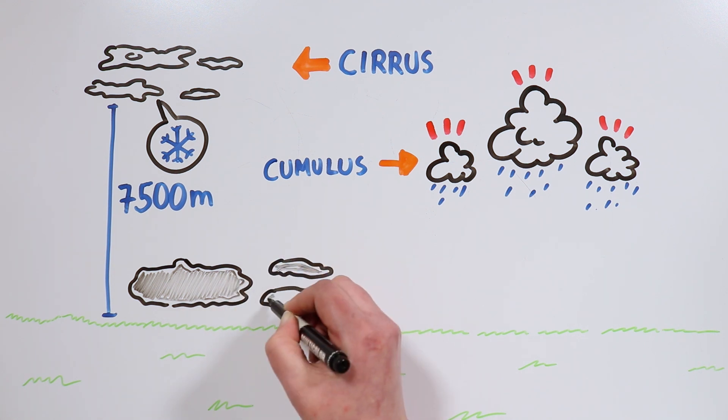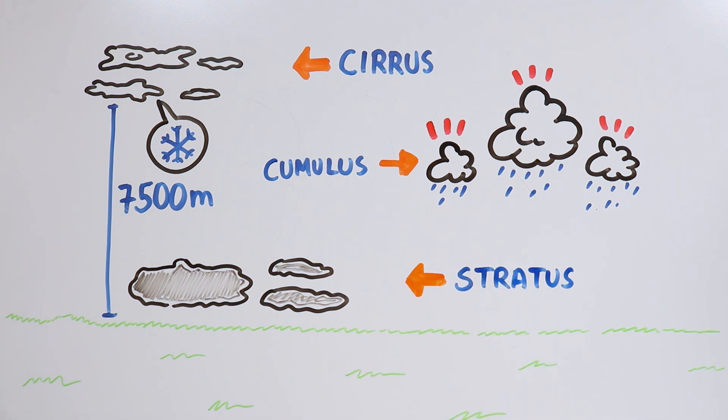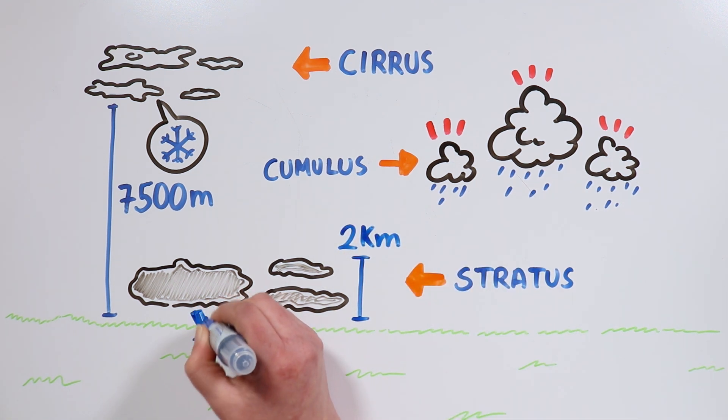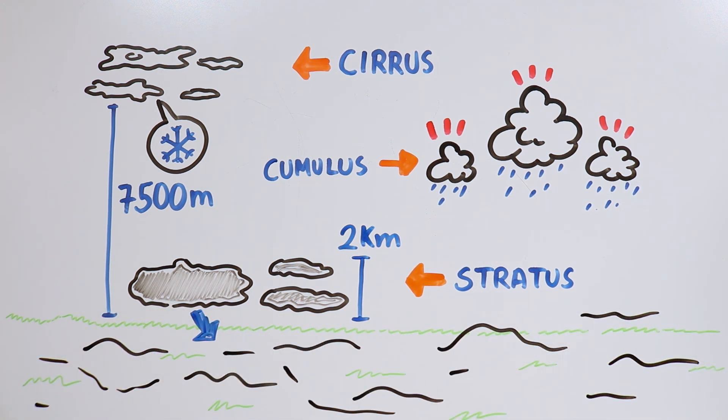And lastly, we have the lower-level clouds, known as stratus. These are elongated horizontal clouds with a grayish color. They are usually located at an altitude of 2 kilometers, and when they form closer to the ground, we refer to them as fog.